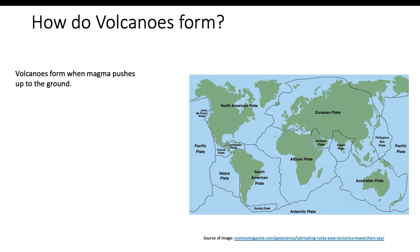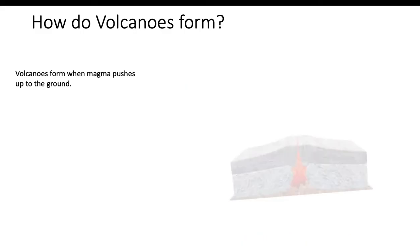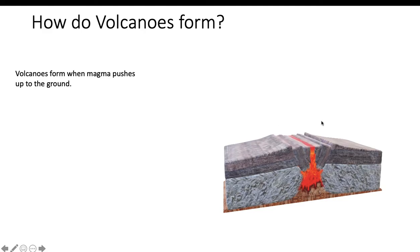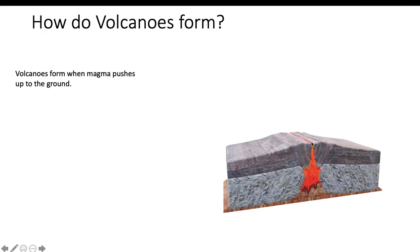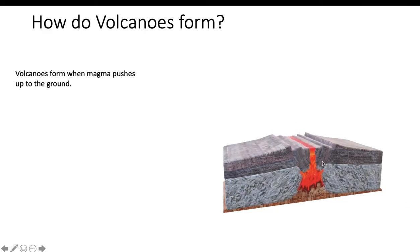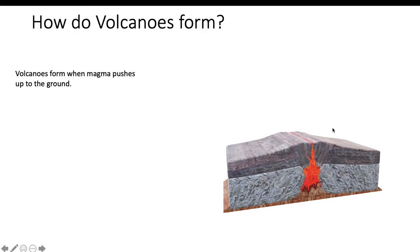There are three things that can happen: divergent boundaries, convergent boundaries, and transform boundaries. A divergent boundary is when two plates move away from each other. As you can see, there are two plates — this is one plate and this is the other plate.